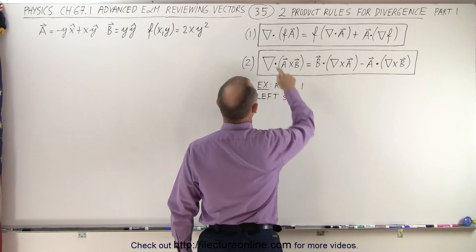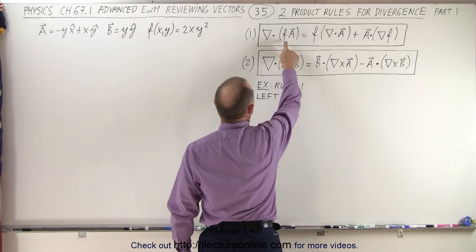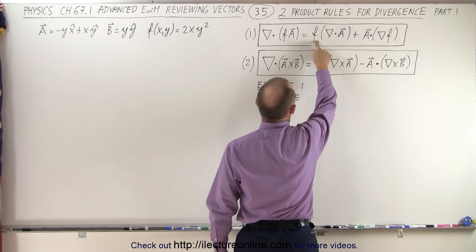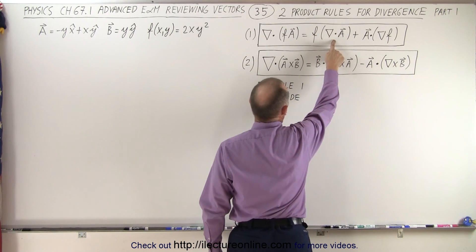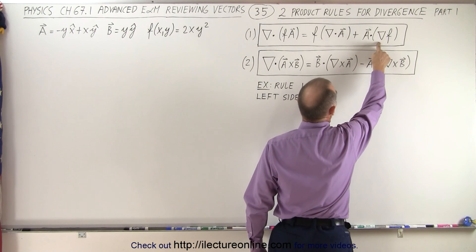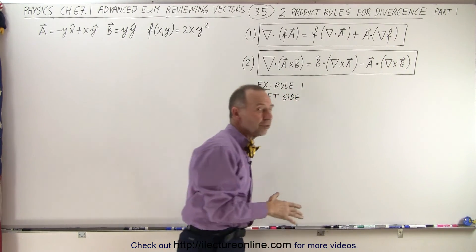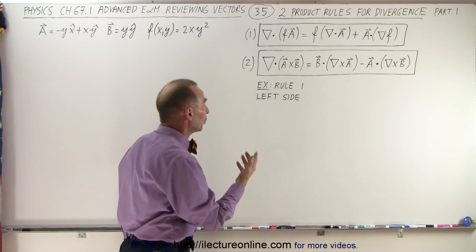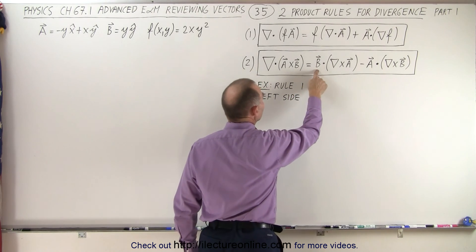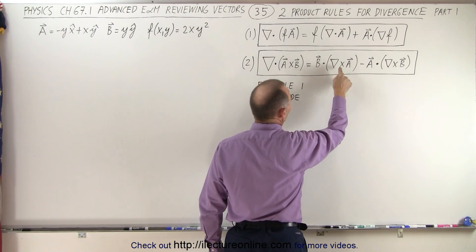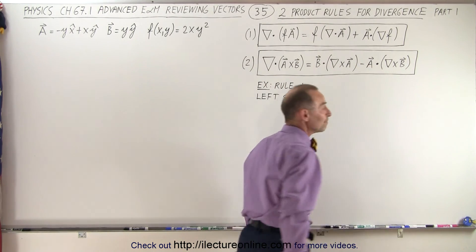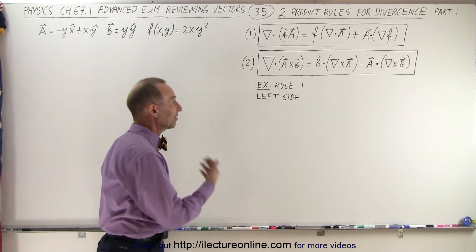Rule number one: the divergence of the product of a scalar function and a vector function is equal to the scalar function multiplied times the divergence of the vector function, plus the dot product of the vector times the gradient of the function. The second rule is that the divergence of A cross B is equal to B dot curl of A, minus A dot curl of B. We're going to show you both of those rules via some examples.